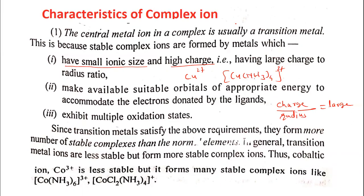For example, Fe3+ has a higher charge and a smaller ionic radius, so the charge-to-radius ratio is large. As a result, ligands bond very closely to the metal ion and the interaction between the metal ion and the ligand is strong. Therefore, transition metal ions form stable complexes because of their small ionic size and high charge.